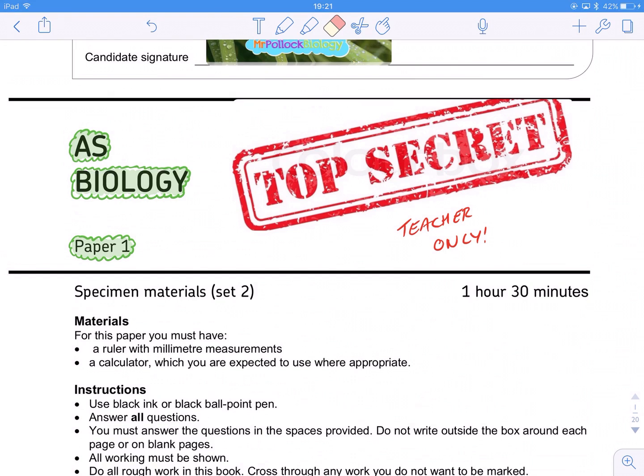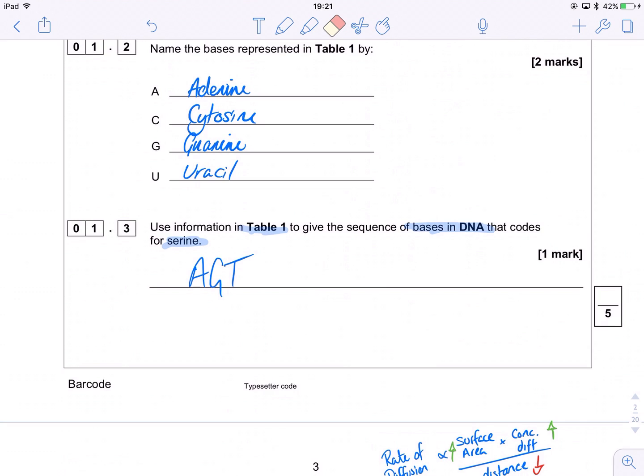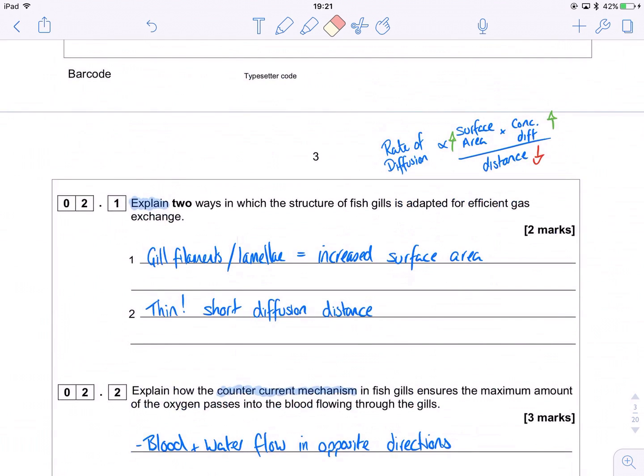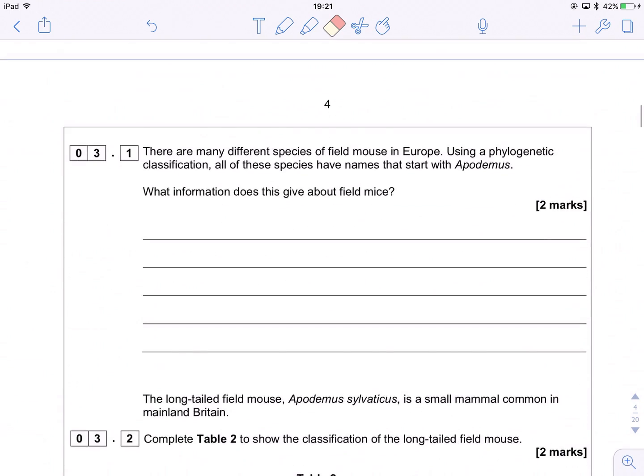We're doing question 3, I believe. So we did question 1, which was mRNA DNA stuff. We did question 2, which was gas exchange in fishes. And we're on to question 3, which is a phylogenies question.